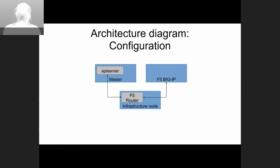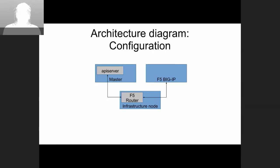This diagram shows what I just described. In the upper left you have the master — specifically the API server. The F5 router is running on an infrastructure node connecting to the API server, which is part of the OpenShift master, to get route and service information. It then connects to the F5 Big IP host. The route synchronizer acts as an intermediary between the OpenShift master and F5 Big IP. The master is the source of truth; the route synchronizer stores no state outside its own configuration and some caching.